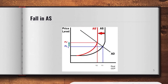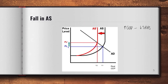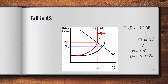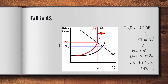A fall in AS is also similar. If there's an increase in cost of production, your short-run AS will shift inwards — from AS to AS prime. This causes real GDP to fall from Y1 to Y2 and the GPL to increase from P1 to P1 prime — so there's an increase in the general price level and a fall in national income. This makes sense because firms will pass on higher production costs to consumers in the form of higher-priced goods and services, so the general price level of the entire economy increases.